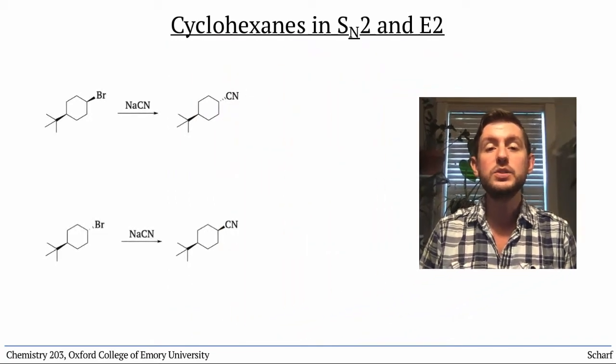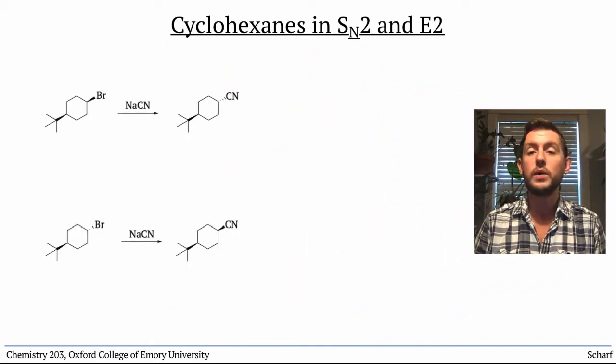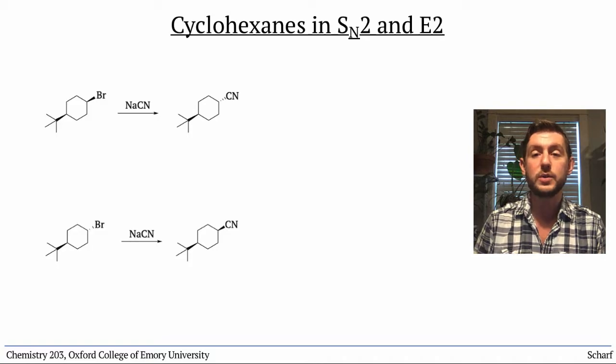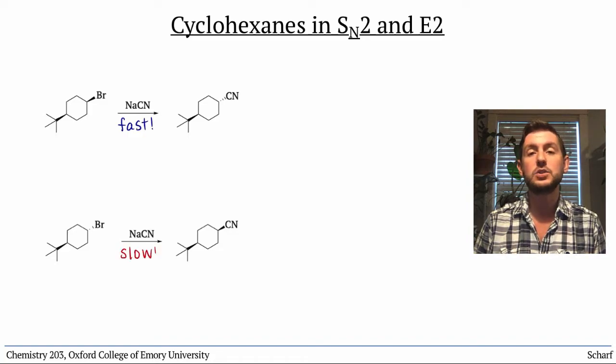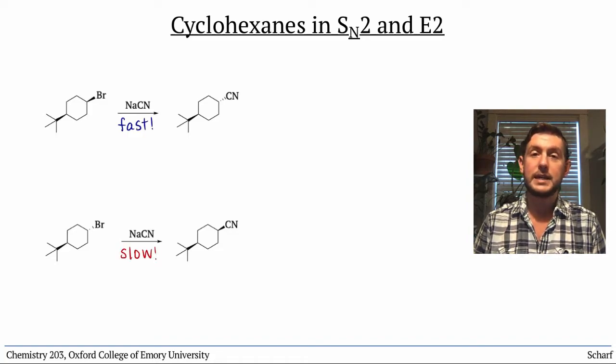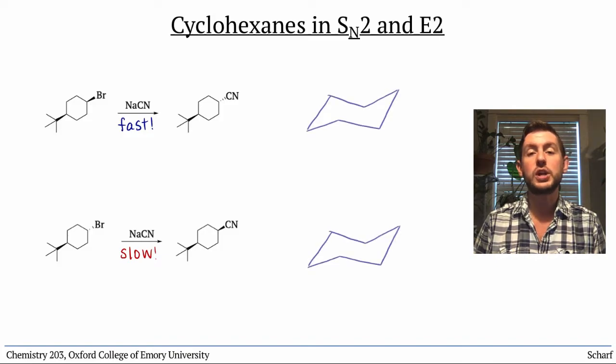Let's examine these two stereoisomers of 1-bromo-4-tertbutylcyclohexane. This isomer reacts much more quickly than this one when treated with a good SN2 nucleophile, like cyanide. To understand why, we need to examine their chair conformations.